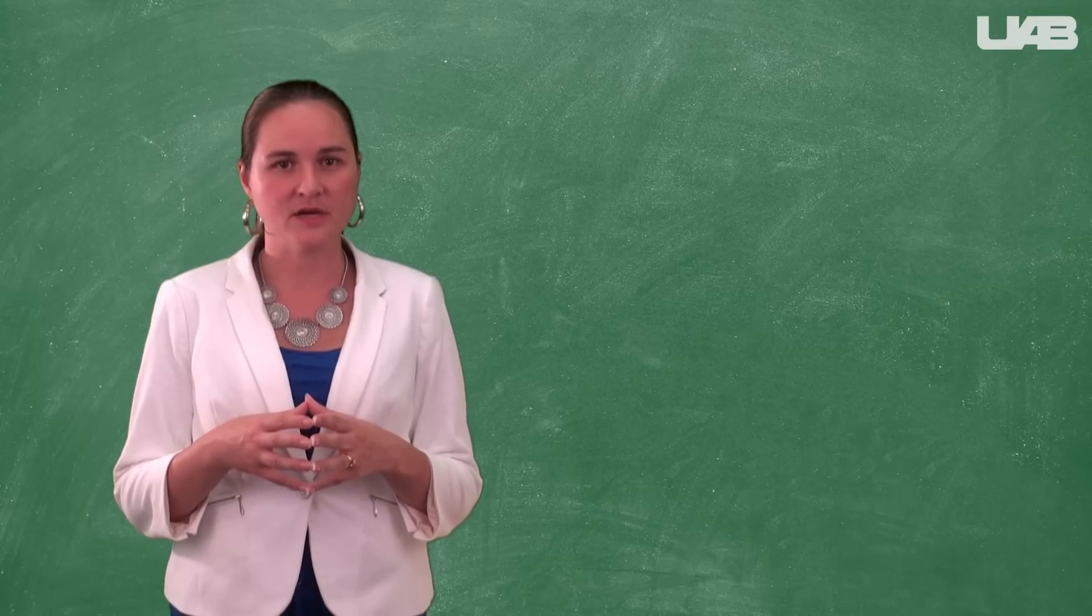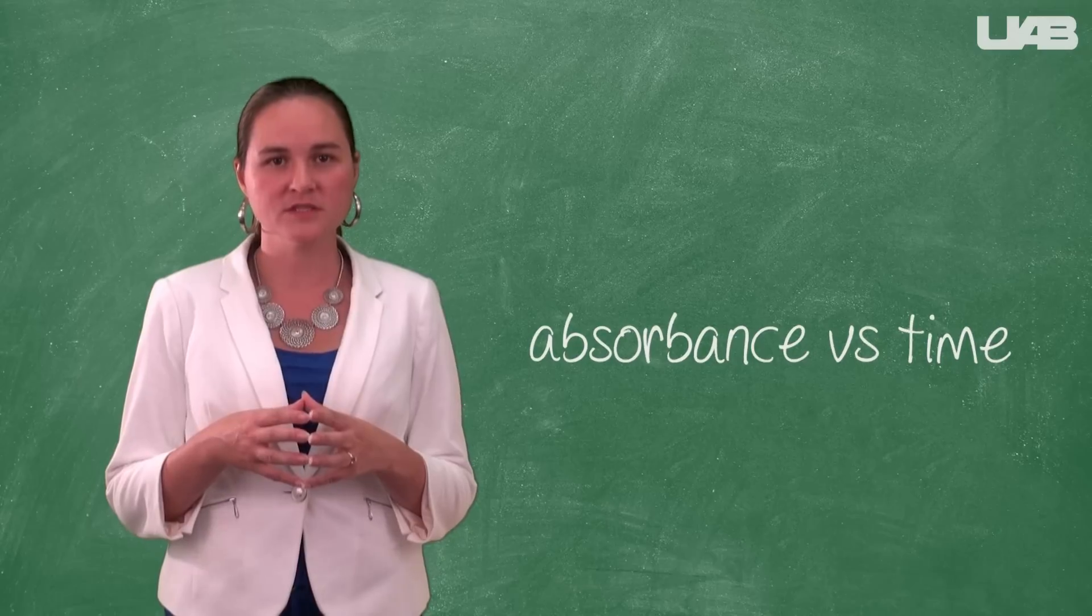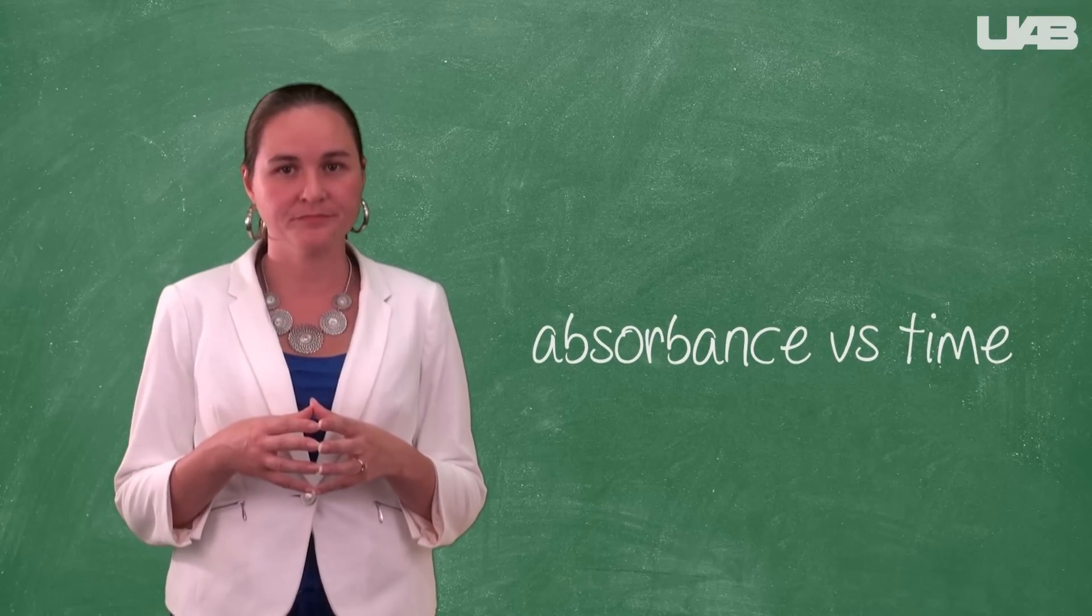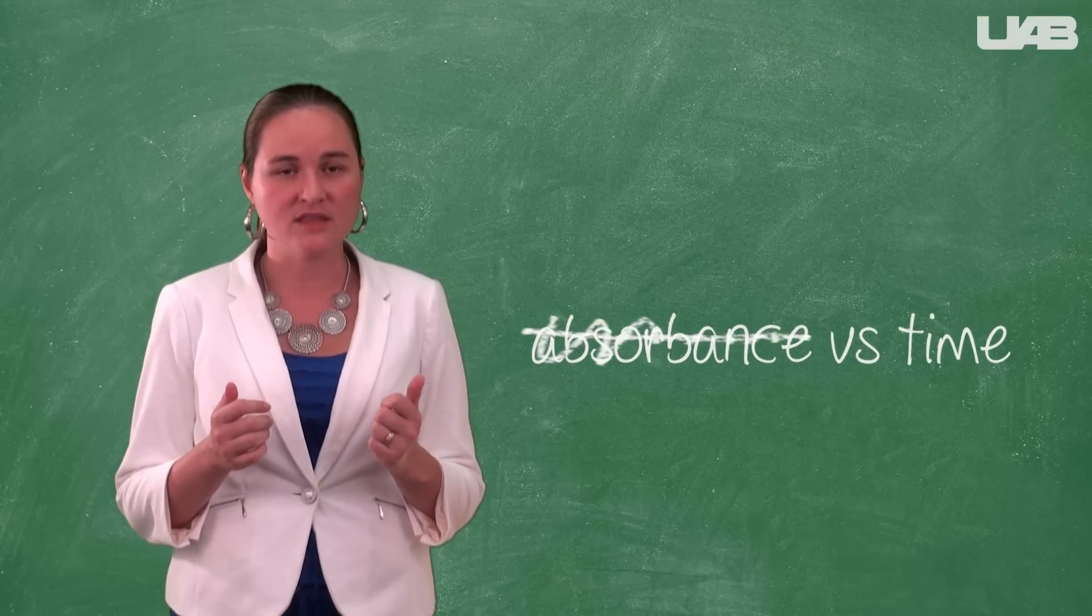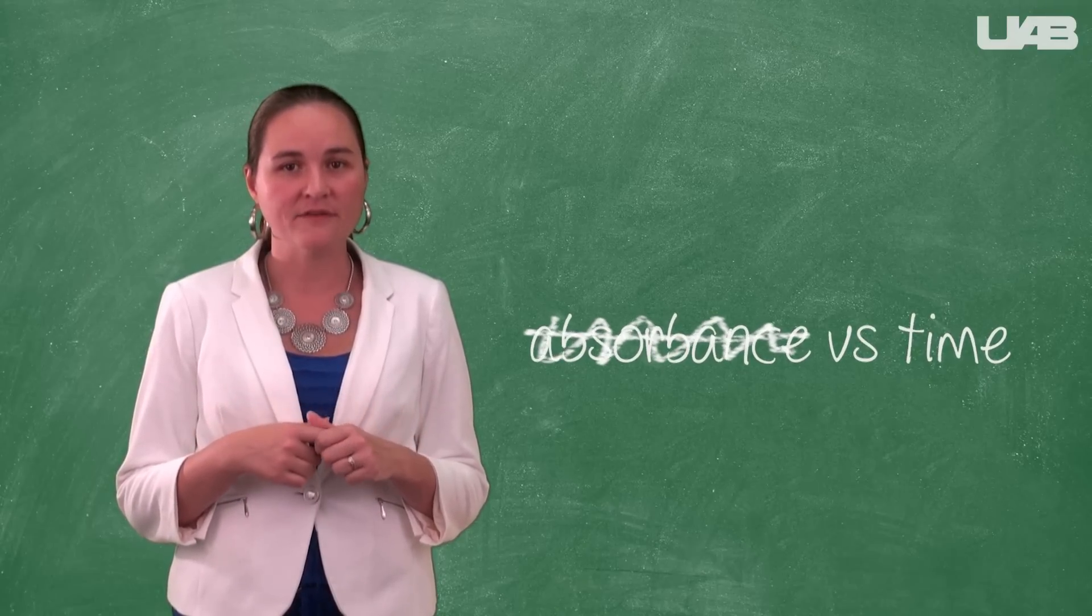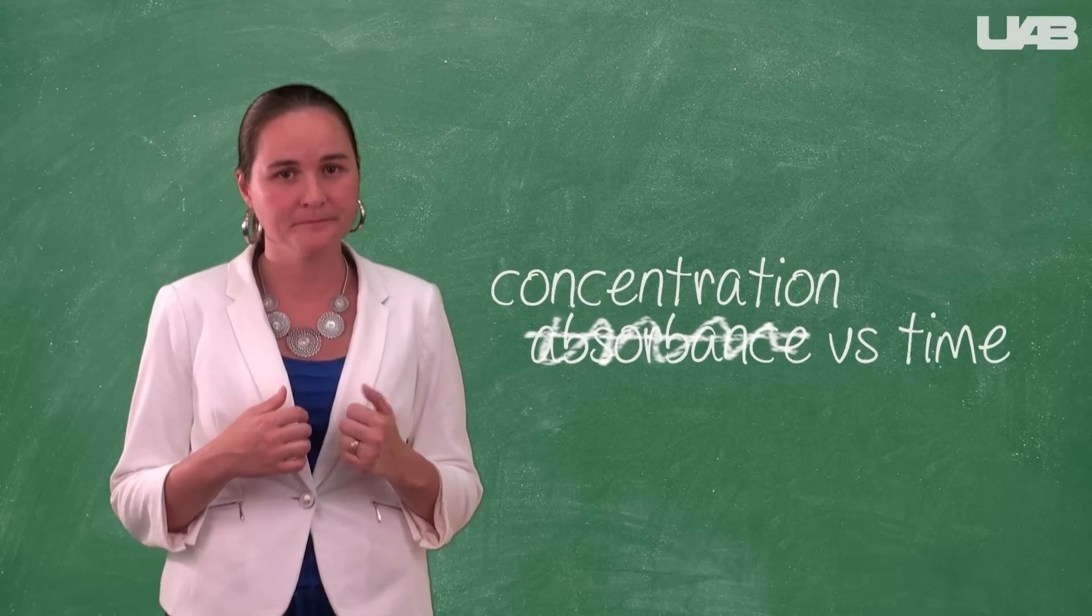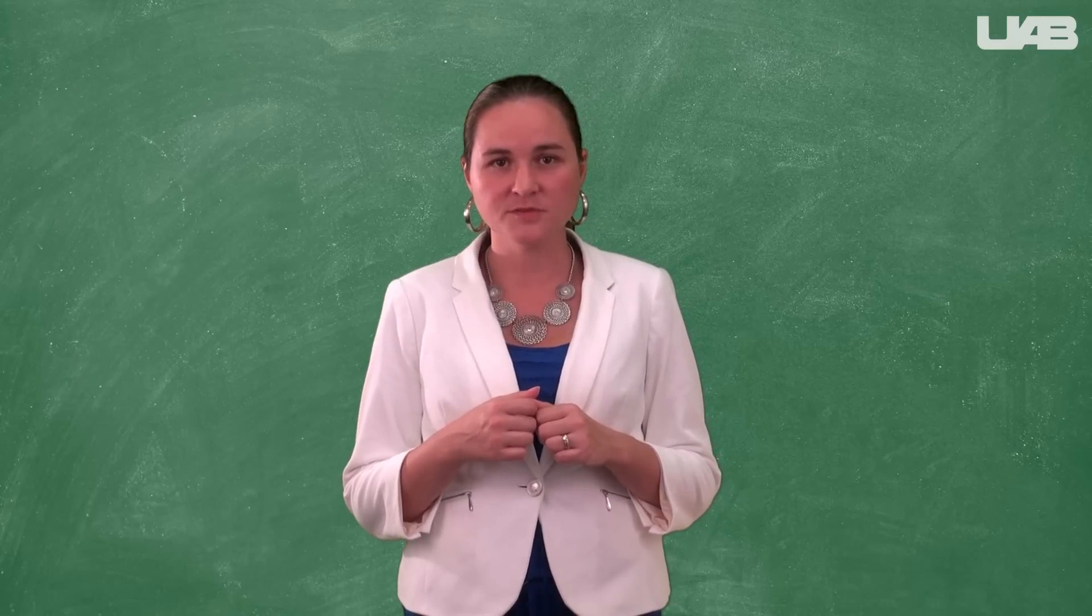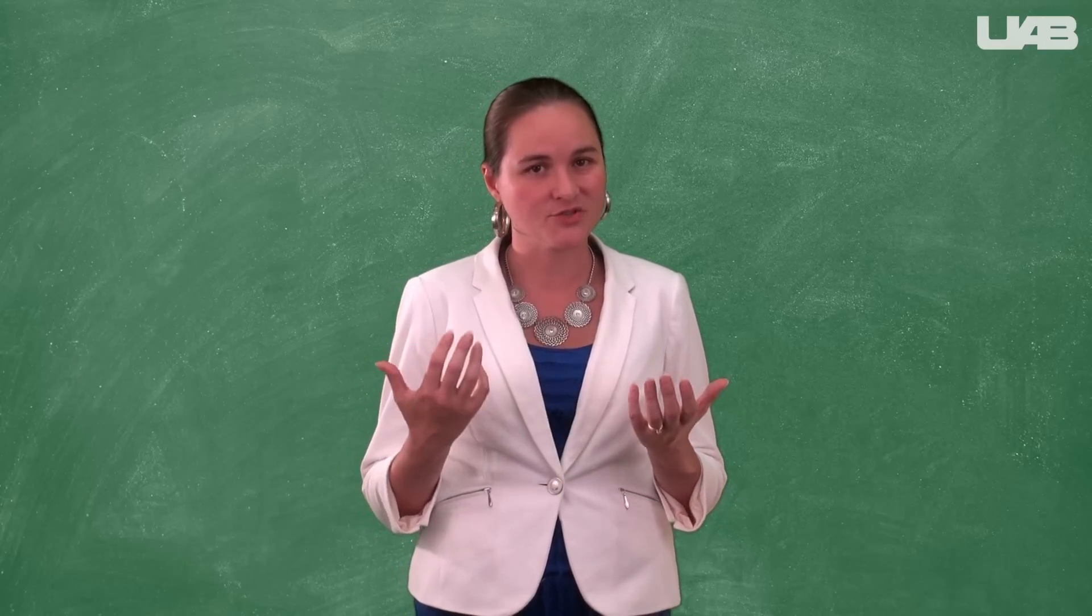During the final part of the experiment, you will use the UV-Vis spectrophotometer to collect absorbance versus time data for the reaction. However, if you think back to the integrated rate equations and their graphs, you need to have a graph of concentration versus time to determine the order of the reaction. Based on what you determined during the first part of the experiment, how could you convert these absorbance values to concentrations?